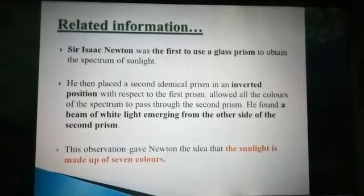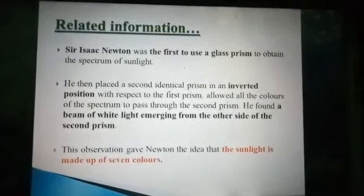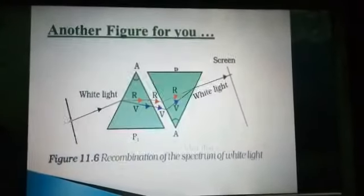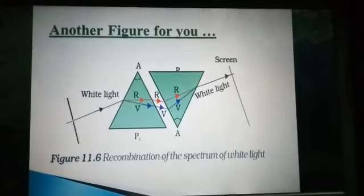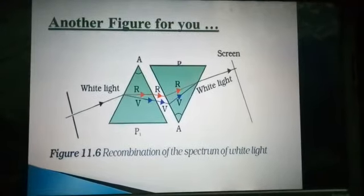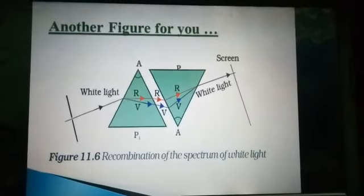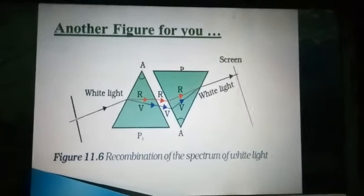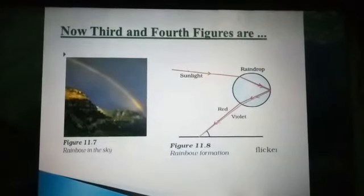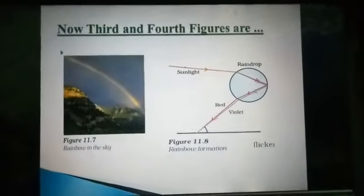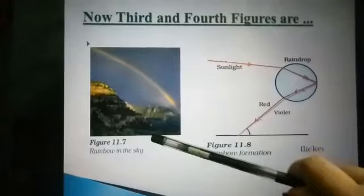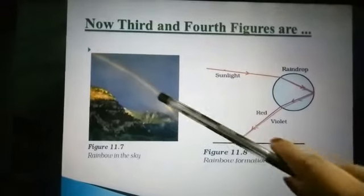Newton's conclusion was that sunlight is made up of seven colors. Next we have figures 11.2 and 11.3 taken from your NCERT textbook, showing the rainbow — the beautiful rainbow you observe during the rainy season.